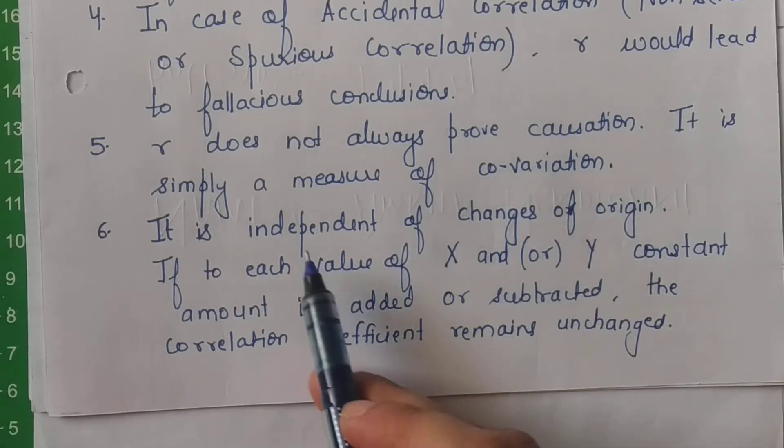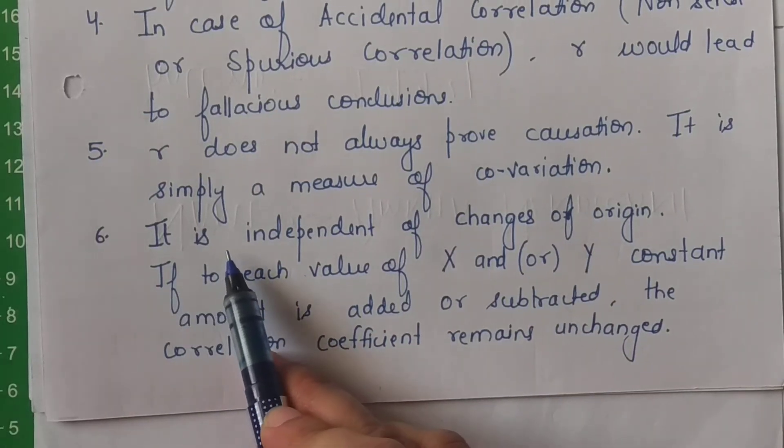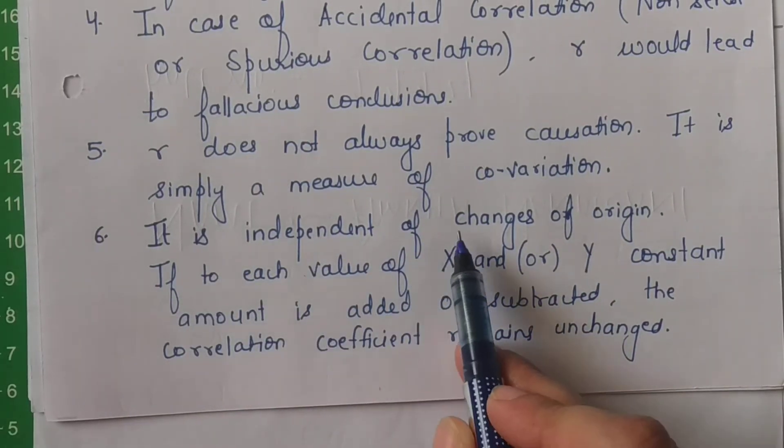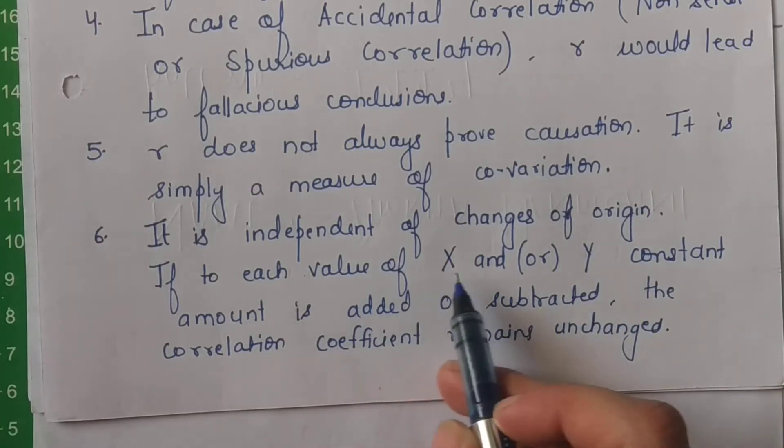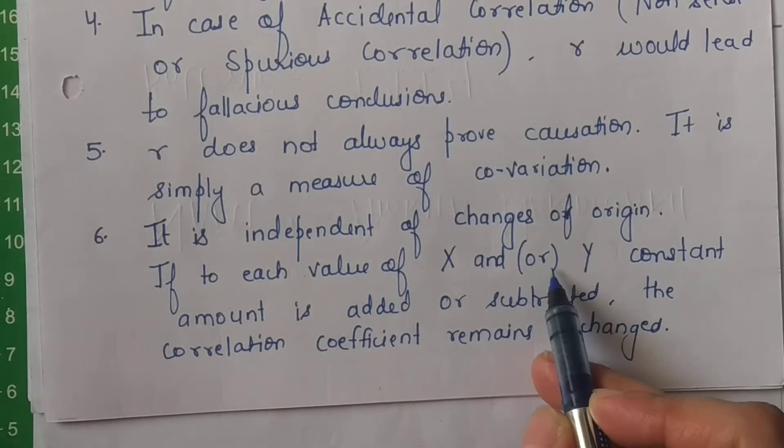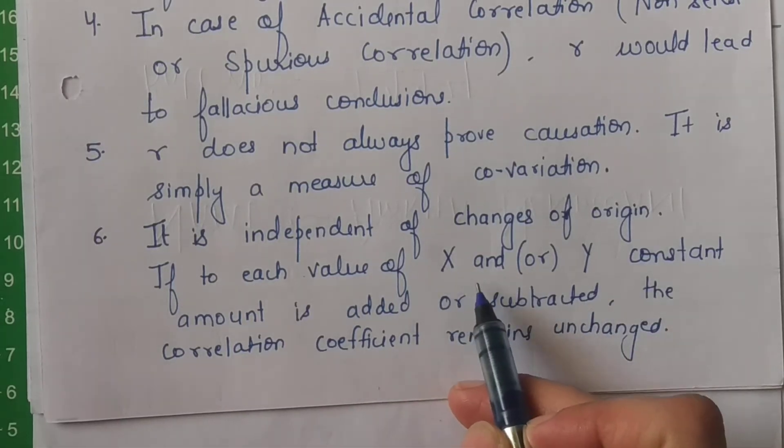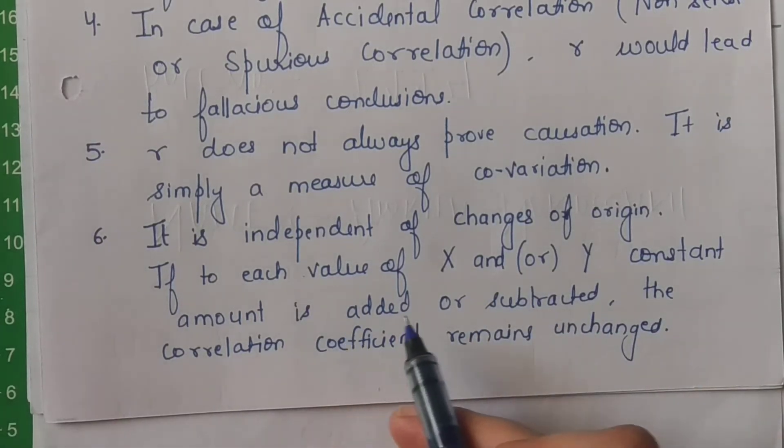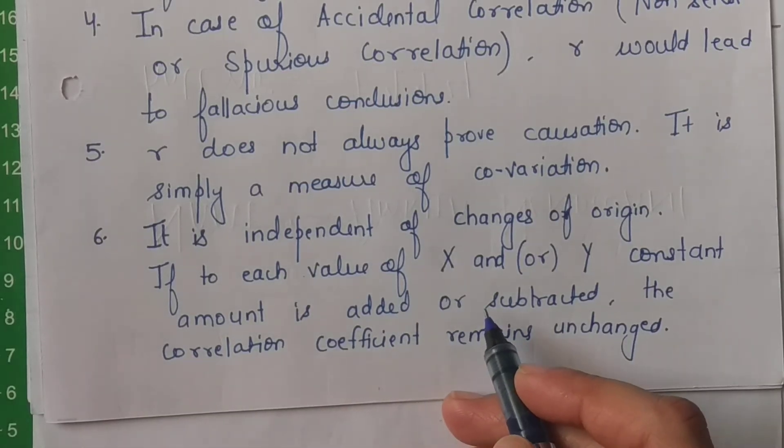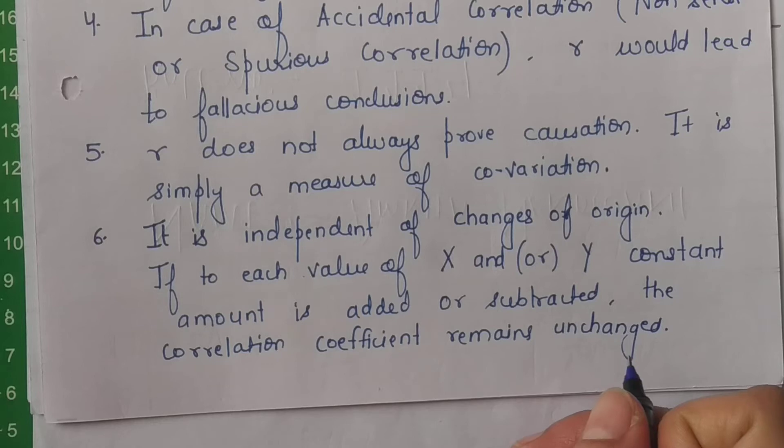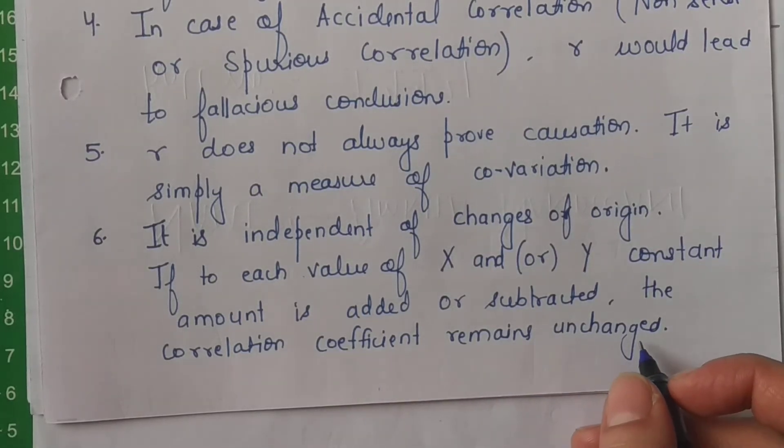Then baat karte hain change of origin and change of scale ki. Jo humara coefficient of correlation hai, it is independent of changes of origin. Iska kya matlab hua? Agar aap x or y, yeh jo dono variables hain, x or y dono ki, ya ek kisi variable mein constant amount add kar deti hain sabhi items ke andar, ya constant amount subtract kar deti hain sabhi item ke andar se.